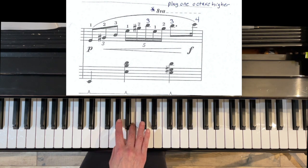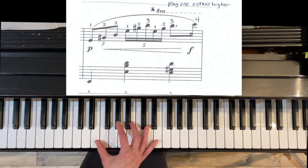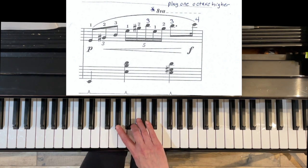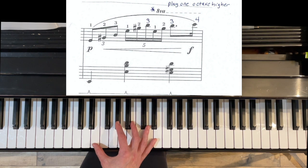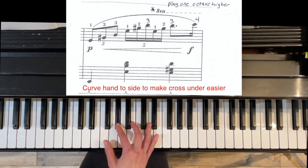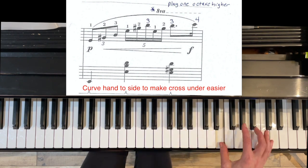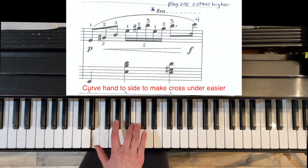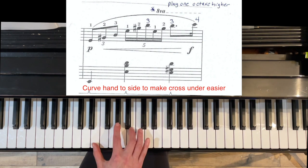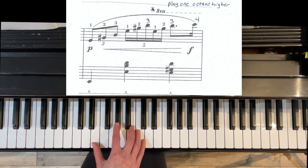Then our thumb is going to fold under the hand. You see how my thumb's doing that? And sometimes it's a little bit easier if my hand is like this. If I have my hand a little bit curved to the side, it makes it easier than this reaching. So that's what I would suggest if that works for your hand.